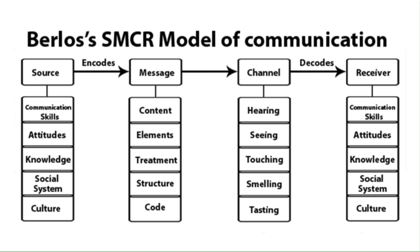Next, we have channel. Channel refers to the five sense organs: hearing, seeing, touching, smelling, and tasting. Communication occurs through one or more of these channels. For example, in hearing, the use of the ear to receive the message — such as orally transmitted messages and interpersonal communication. For seeing, visual channels are used — for example, watching television where the message is conveyed through the scene or film.